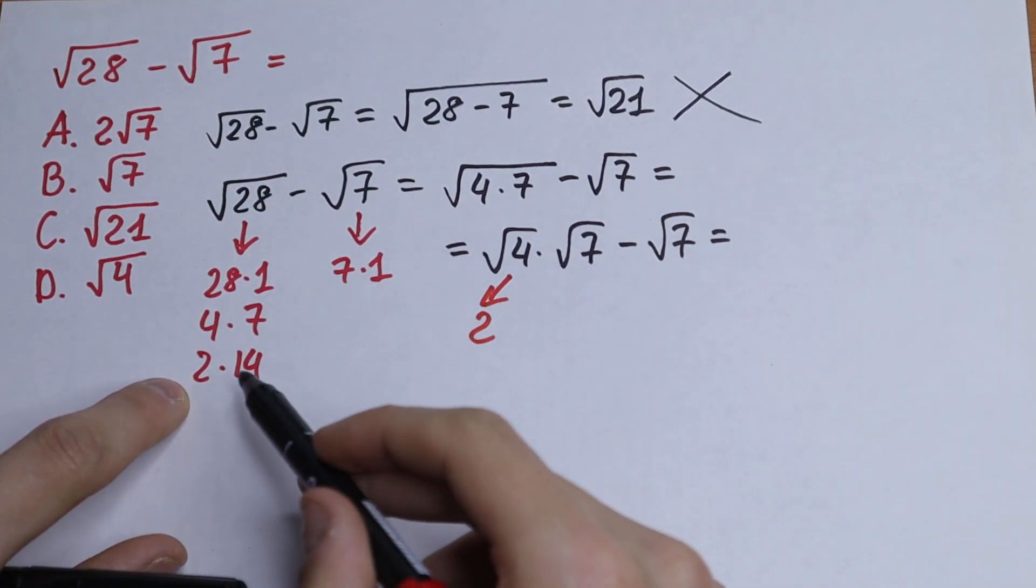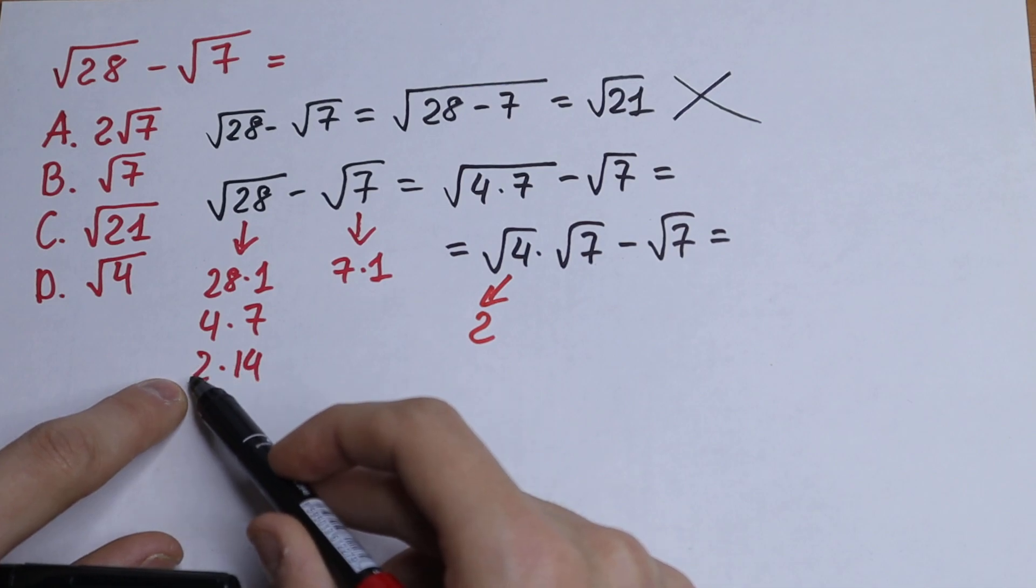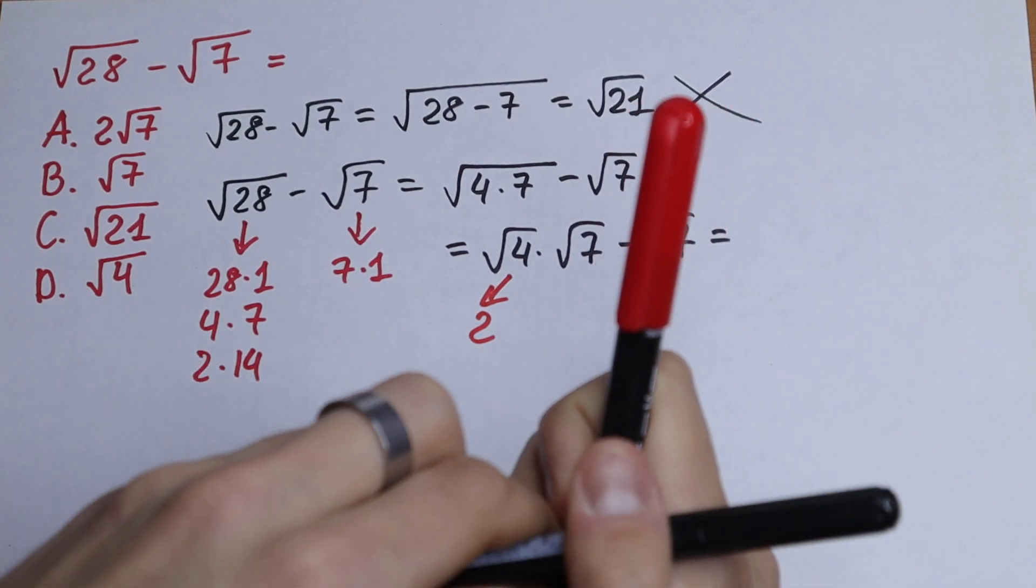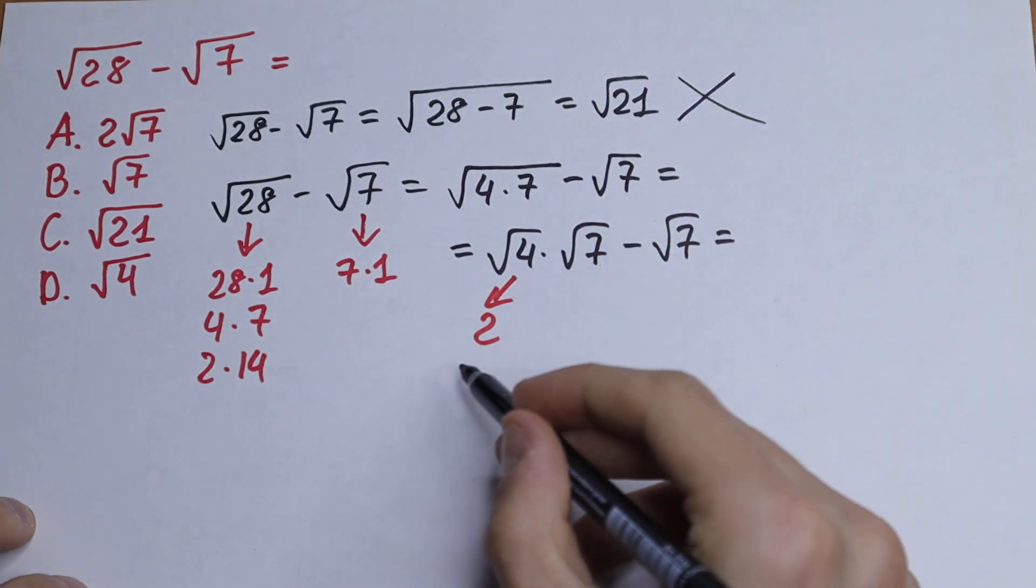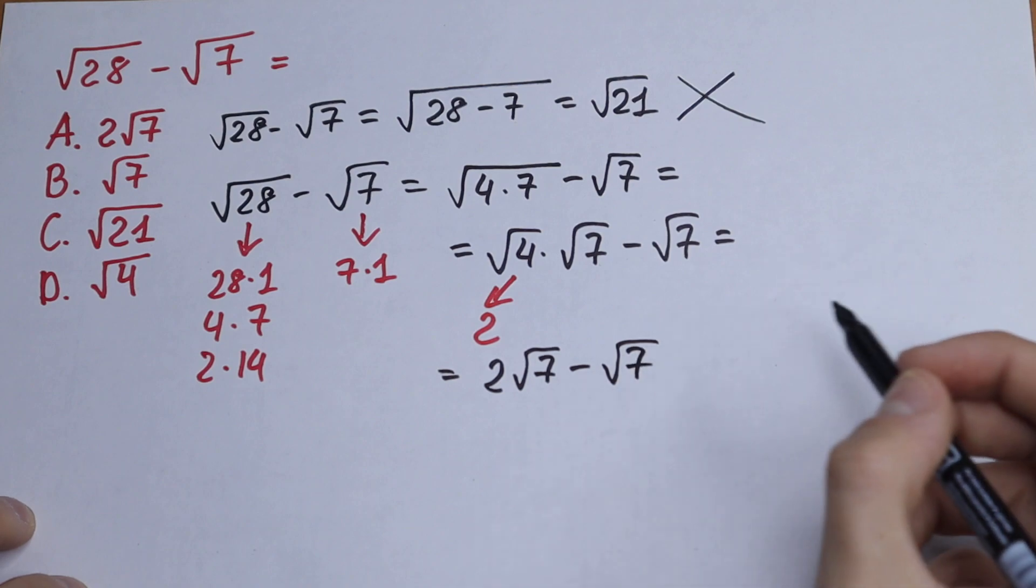And this is not good for us because we cannot take square root of 2 and 14. This is not suitable for us. So we will have 2 square root of 7 minus square root of 7.